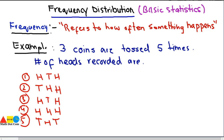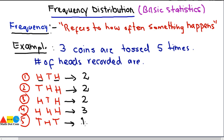So these are the five instances we have recorded after tossing the coins five times. Our basic purpose is to record the number of heads in this five-time tossing. The number of heads in the first toss were two, the second toss two, the third toss two, the fourth toss three, and the fifth toss one.